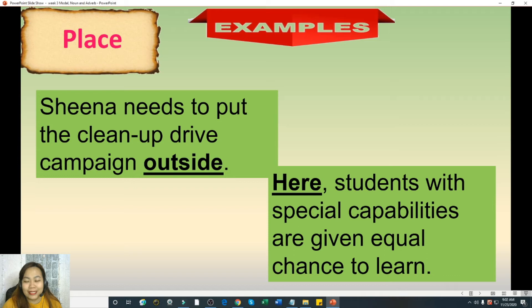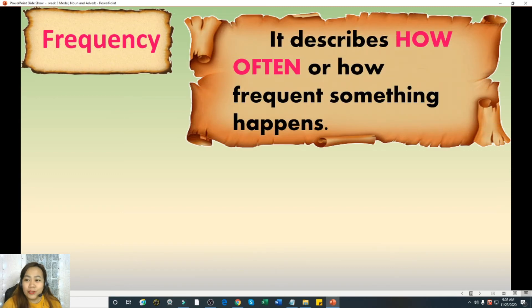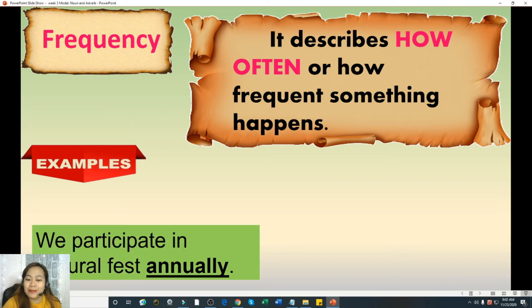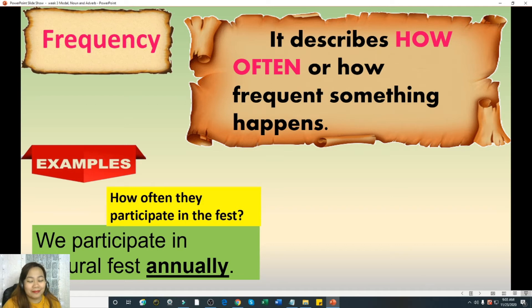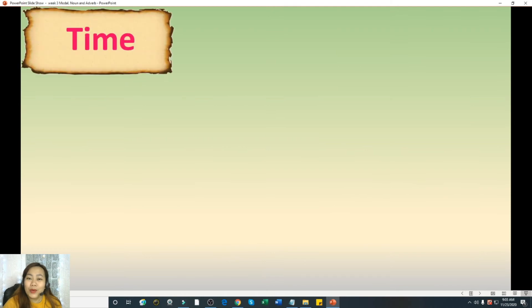We have the third one which is the frequency or adverb of frequency. It describes how often or how frequent something happens. So it answers the question how often. Let's have examples. We participate in cultural fest annually. How often do they participate in the fest? The answer is annually. Another, our family goes to church every Sunday. How often do they go to church? Answer is every Sunday. So in the second sentence, we only have every because it describes how frequent they go to church and Sunday is a noun.